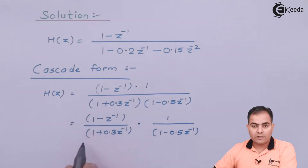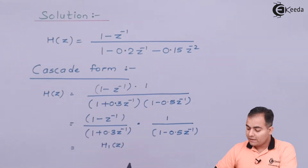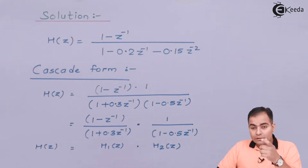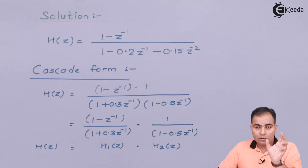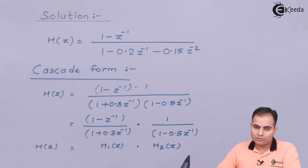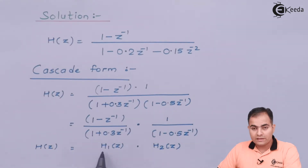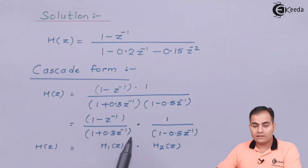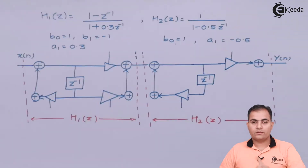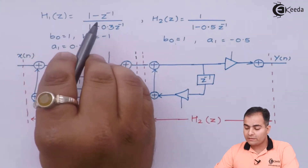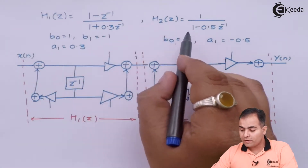The first part is H1(z) and the second part is H2(z). The two transfer functions are connected in series — the first system is designed using H1(z) and the second using H2(z). So H1(z) = (1 - z⁻¹) / (1 + 0.3z⁻¹) and H2(z) = 1 / (1 - 0.5z⁻¹).